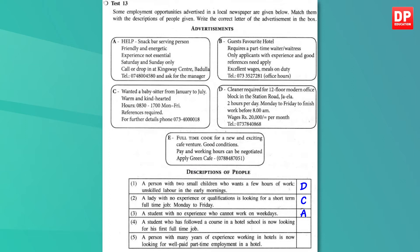Four: a student who has followed a course in hotel school looking for his first full-time job — this is for advertisement E, they need a full-time cook. Five: a person with many years of experience working in hotels looking for well-paid part-time employment in a hotel — this matches B, the person is looking for a part-time job and the hotel offers part-time work to an experienced waiter or waitress. The trick when reading is to always stay alert and read carefully — look for key phrases to fish out the correct answer, and you may want to use a pencil to underline them.